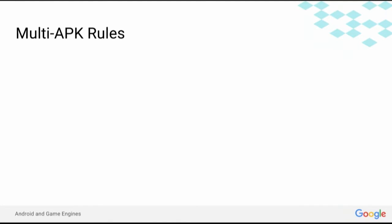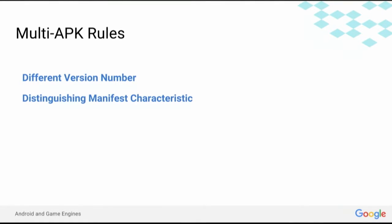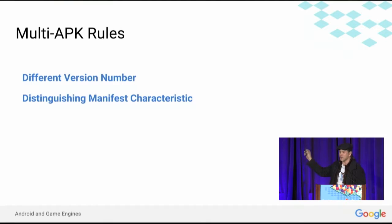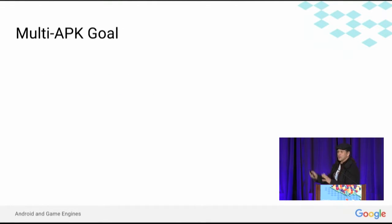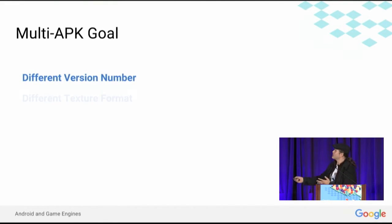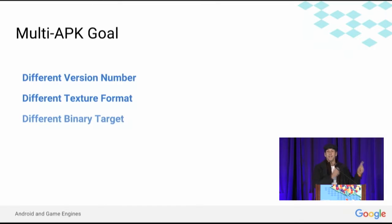The basic rules for Multi-APK are that we need to create APKs that have a different version number with a distinguishing manifest characteristic that allows Google Play to filter correctly. Version numbers are used for priority when the same device can support multiple versions of the same app. The Multi-APK goal is how to generate an APK with different version numbers, different texture formats, and different binary targets in each engine.